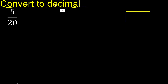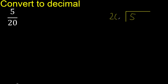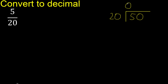5 divided by 20. Since 5 is less than 20, we complete with 0 here — 0 point.